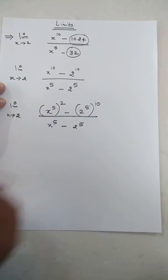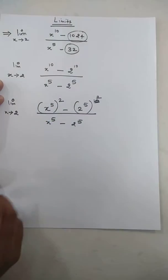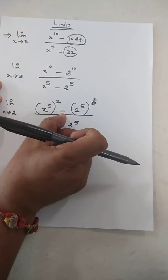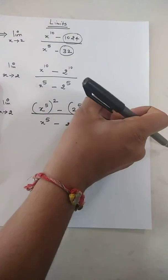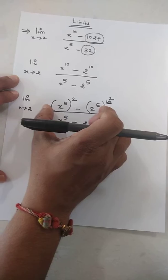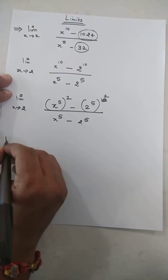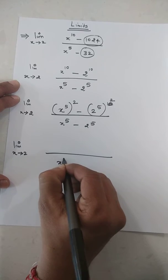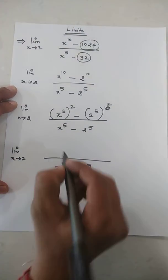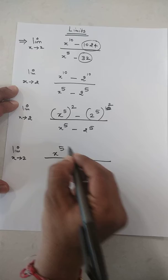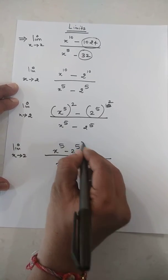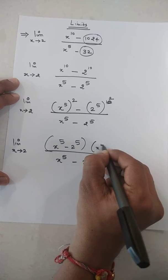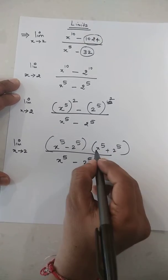This is your a square minus b square, so we can use the formula a plus b times a minus b. Denominator will remain as it is, so x raised to 5 minus 2 raised to 5, that is your a minus b, times x raised to 5 plus 2 raised to 5, a plus b.